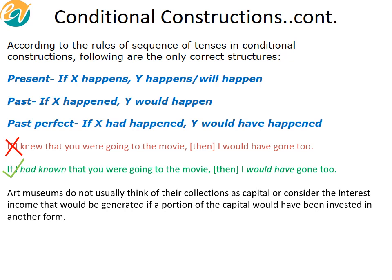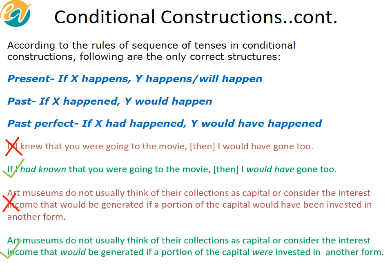Notice what this sentence says: 'If a portion of capital would have been invested.' Looking at the conditional constructs, notice the if-portion — can the if-portion ever have 'would' or 'will'? No. 'Would' or 'will' is for the latter portion. So we cannot have 'would' in the if-portion. How do we fix it? 'If a portion of capital were invested' — which is simple past — 'the income that would be generated.' That's absolutely valid. A handy tip: 'if + subject + would/will' is always incorrect. The if-portion will never have 'would' or 'will'; those only appear in the second portion.